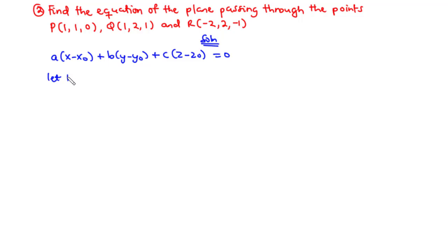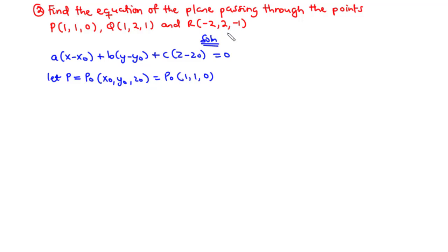We can let the point P be equal to P0, which has components X0, Y0, Z0 — that will be P0 with components 1, 1, 0. So we can let P be equal to P0. However, we don't have the normal vector. Since we have three points, we can generate the normal vector. Before we obtain the normal vector, we need to find two vectors which lie on the plane so that the result of their cross product will equal the normal vector, which is perpendicular to every point on the plane, including P0. By this, we can find the equation of the plane.